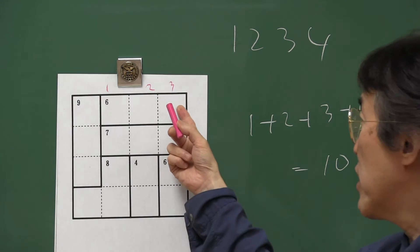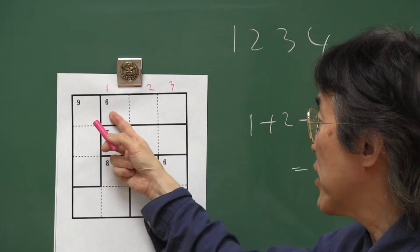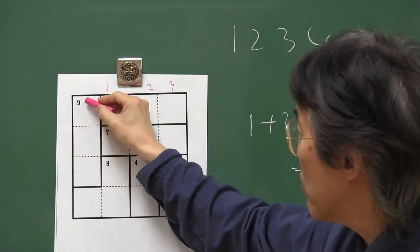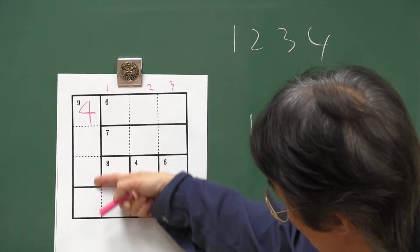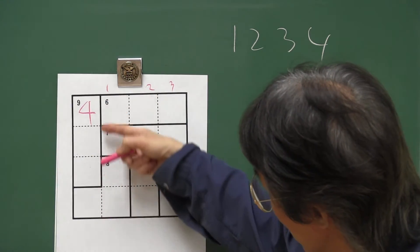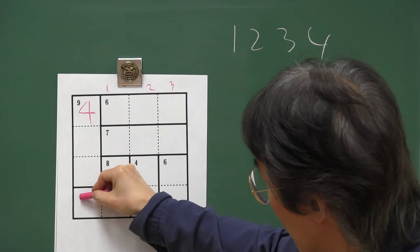From here to here, ten. And here to here, six. Then here is four. Sum of four numbers is ten. Here to here, nine. Then this is one.